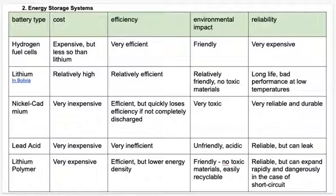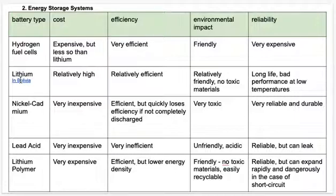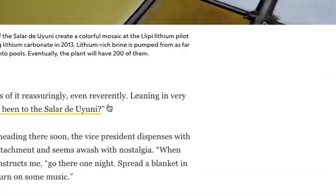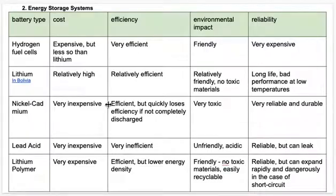Here's a table showing the differences between battery types — costs, efficiency, environmental impact, and reliability. Press pause and have a read through: lithium polymer, lead acid, nickel-cadmium, lithium, and hydrogen fuel cells. There's also an interesting National Geographic article about the lithium fields in Bolivia — click the link if you want to read more. Pay attention to the different types of batteries and how they compare. Put this in your notes as well.